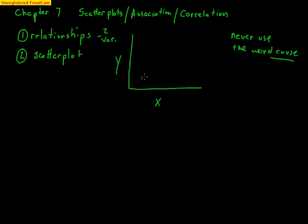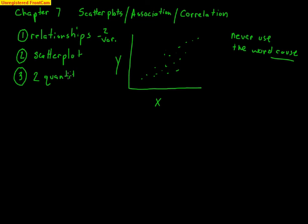Let's look at a scatter plot. The first important point is that x and y must be two quantitative variables. You cannot have favorite color versus favorite time of year — those are categorical. It's got to be two quantitative variables, like height versus weight. So: two quantitative variables.